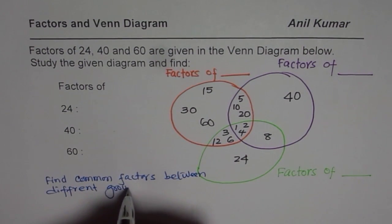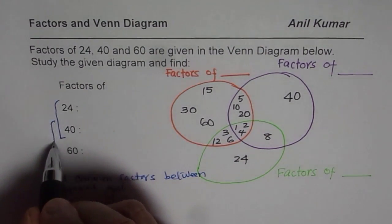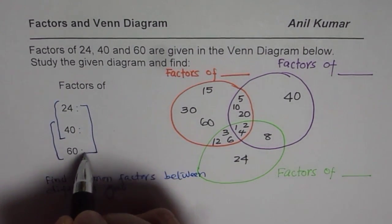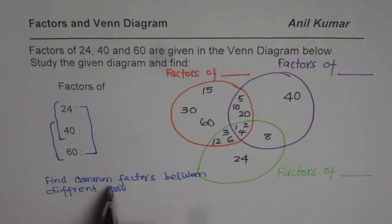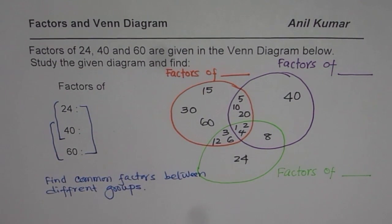You have to arrange, you can say between 24 and 40, between 40 and 60, between 24 and 60, like that. And all three together, find common factors between different groups. That is your last question, which I have added here.